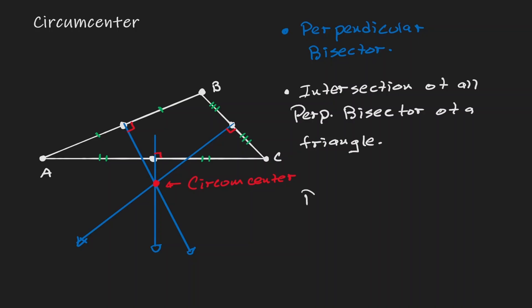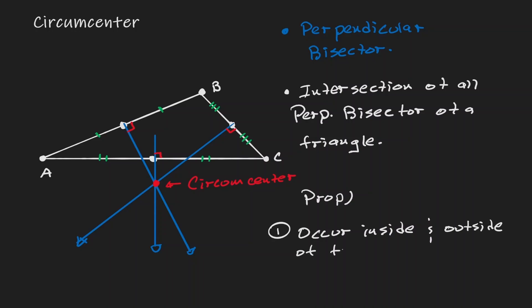Now let's talk about properties. The first property is that the circumcenter sometimes can happen inside the triangle and sometimes outside the triangle — it can occur both inside and outside of our triangle.